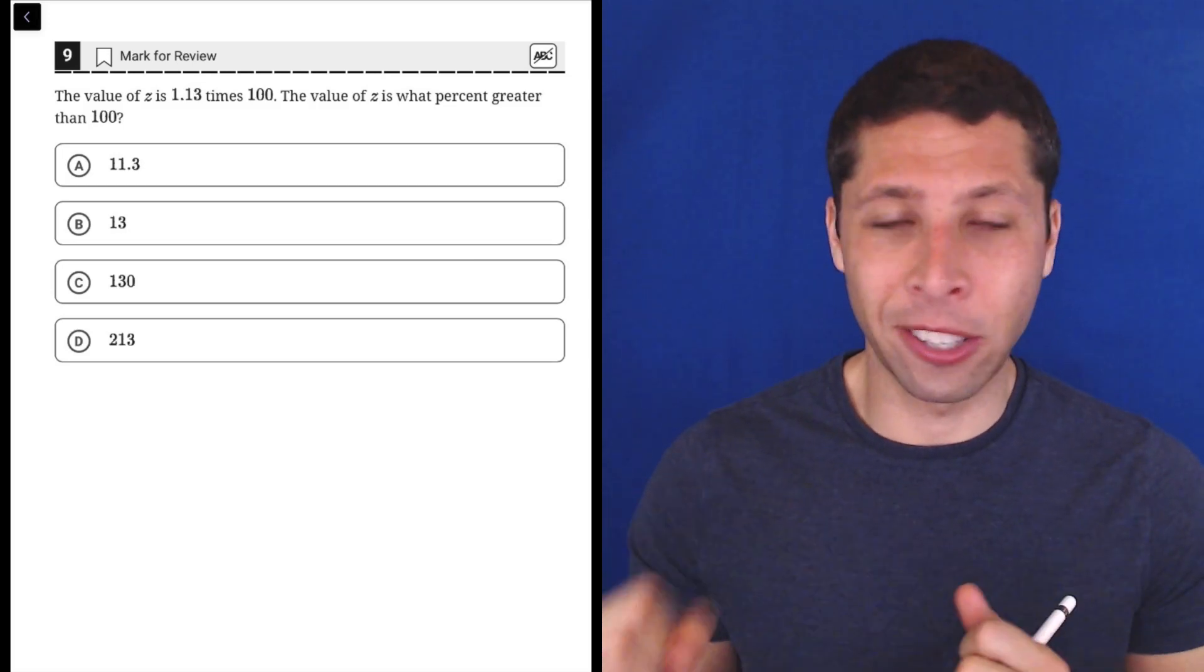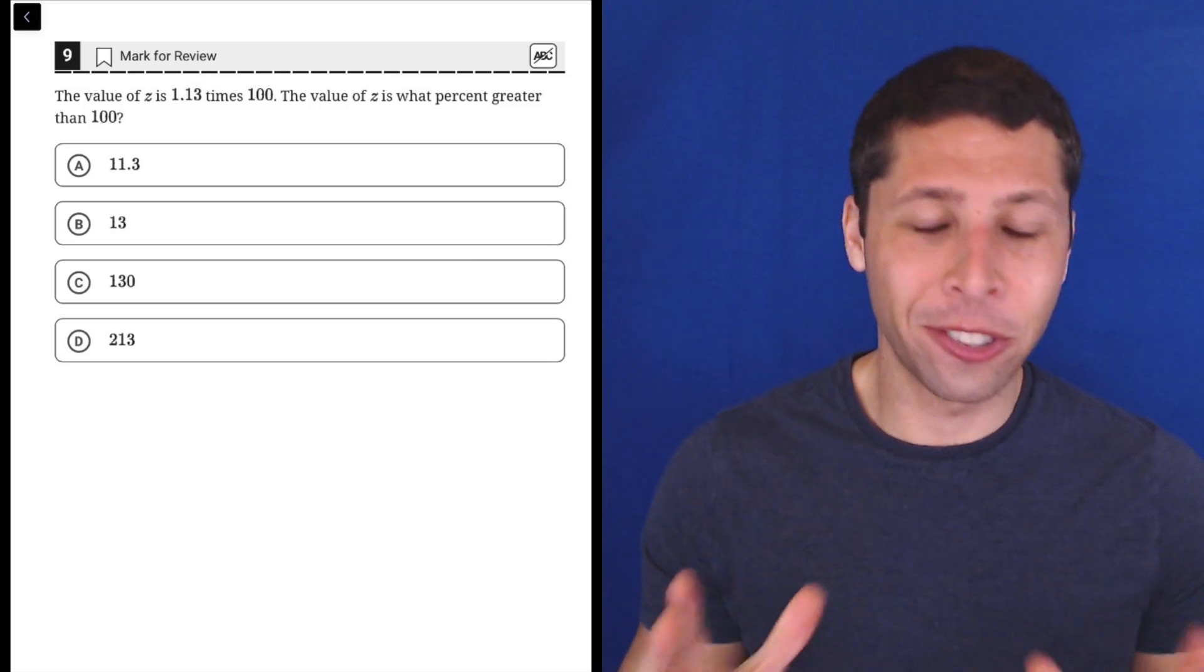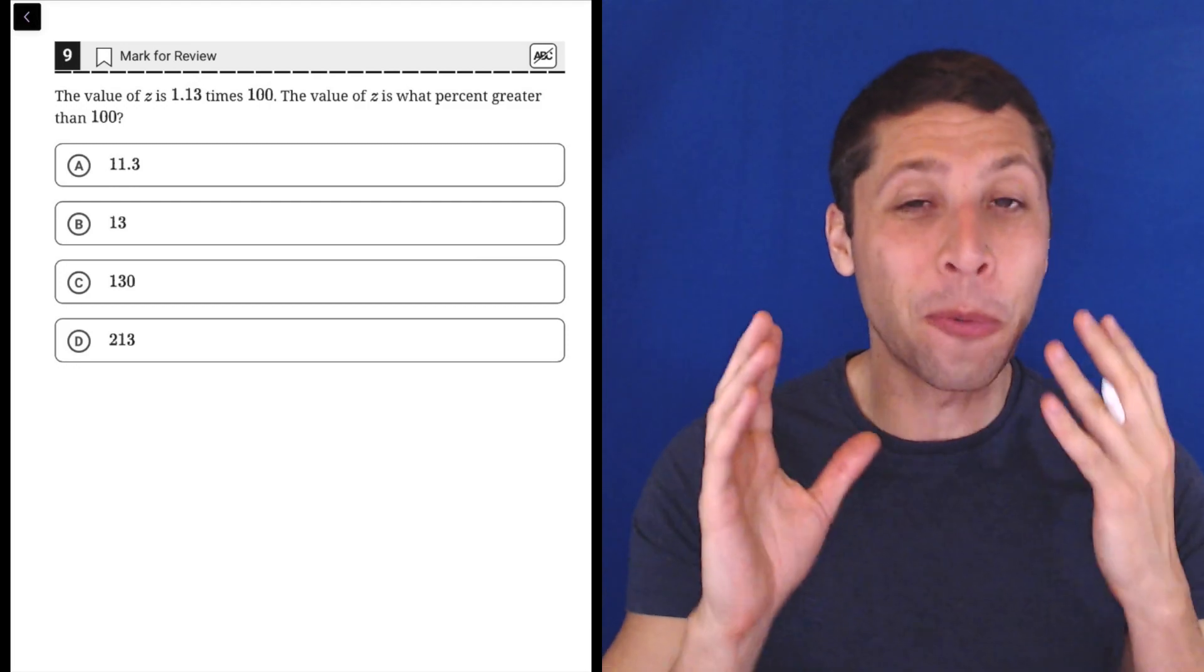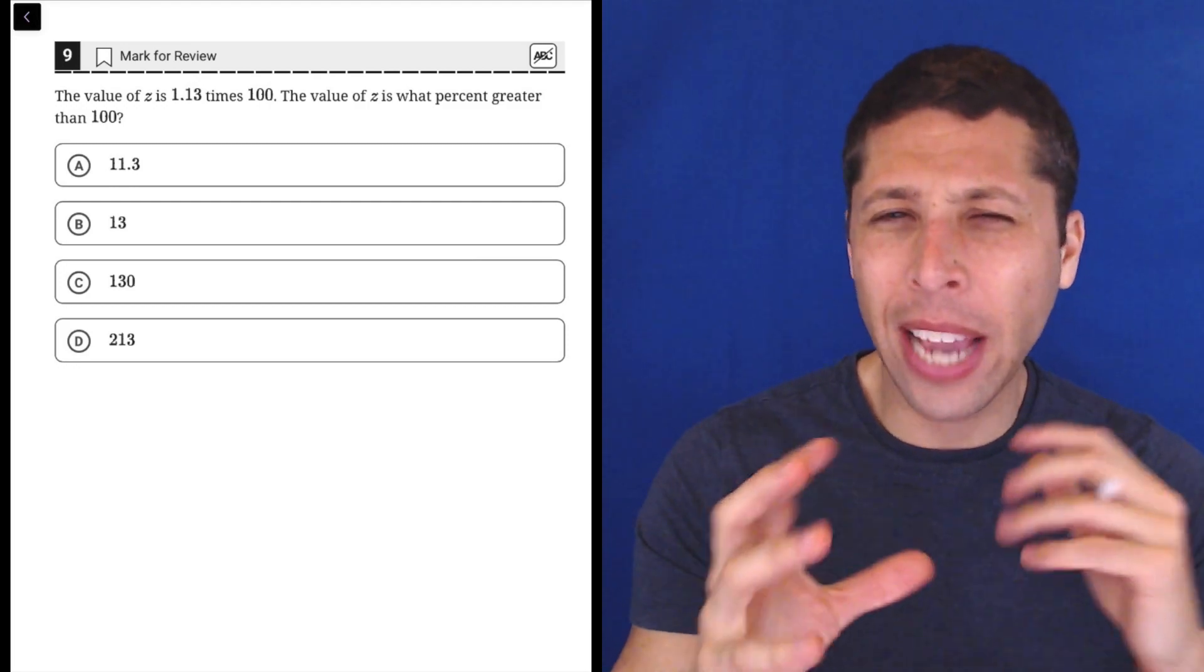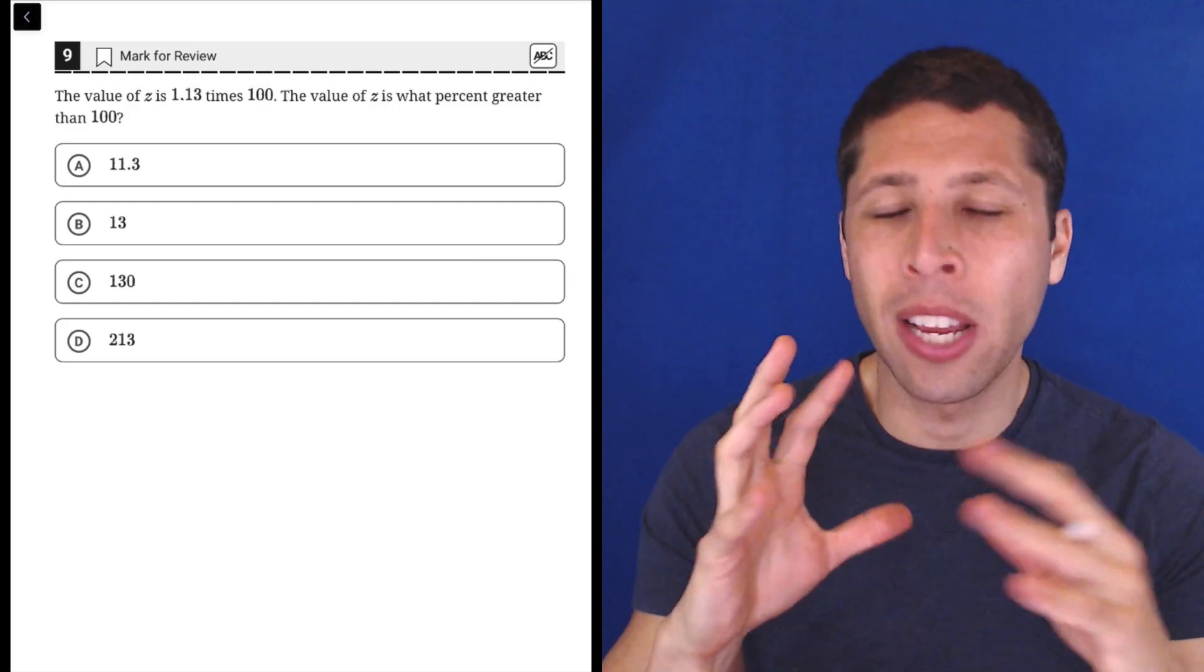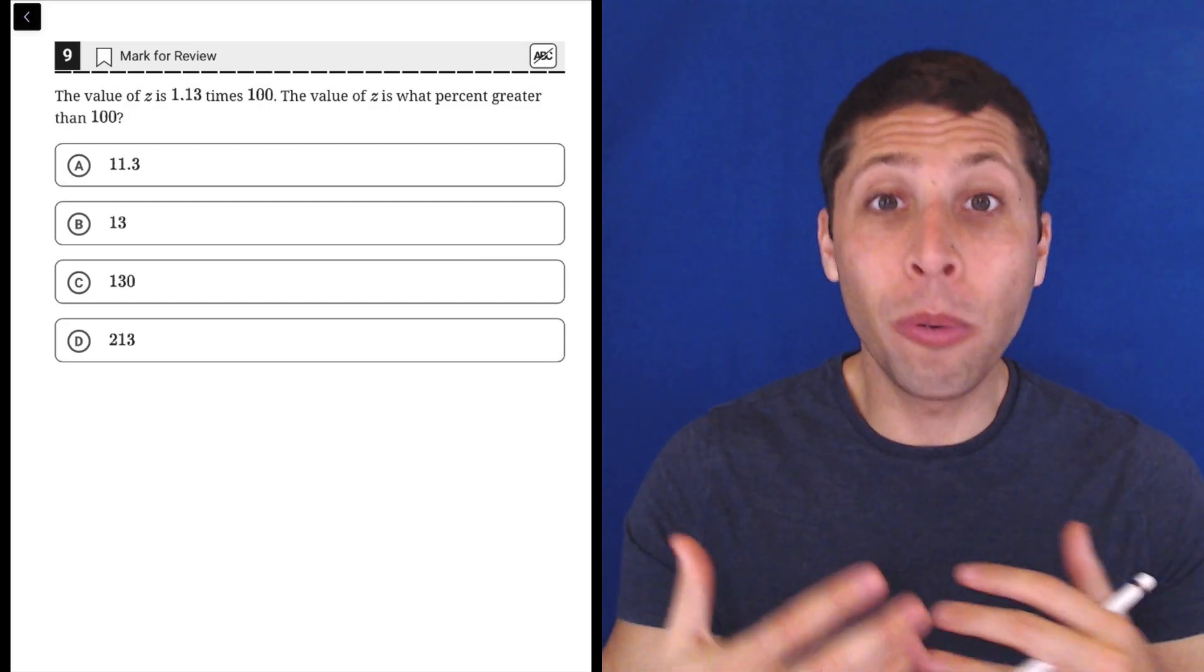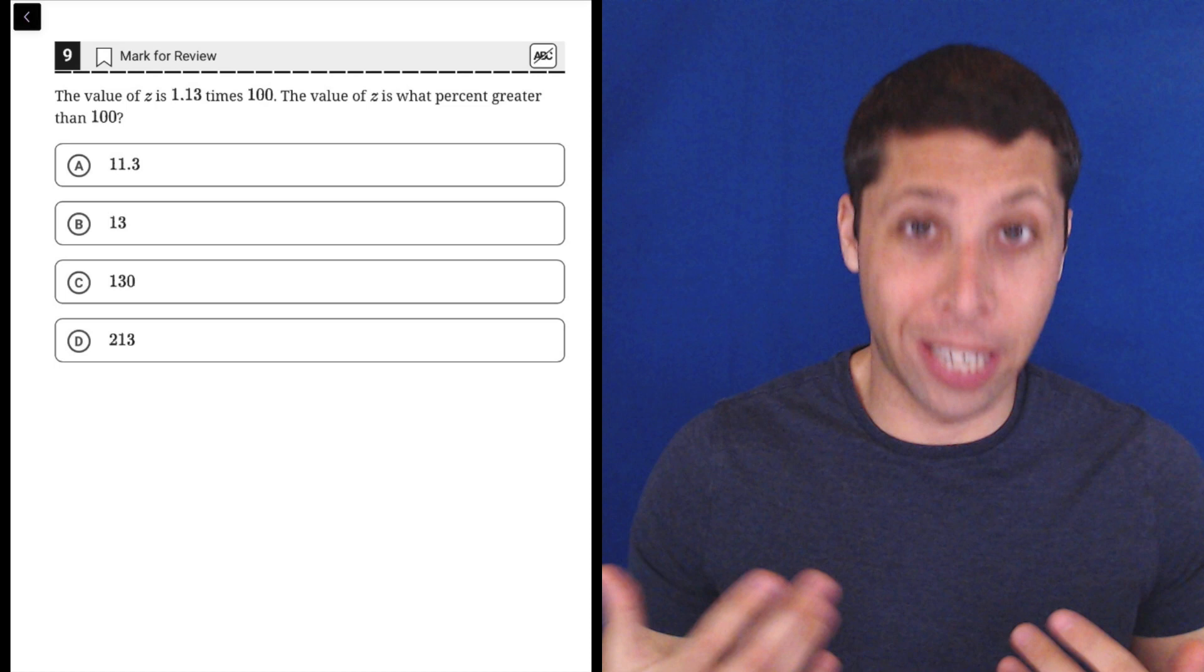I said this earlier in this hard module that percentages are notoriously tricky, and the reason is that the wording of percentages, on the SAT especially, is very counterintuitive and weird and our brain has trouble with it. So when in doubt, we use the open formula to help us.